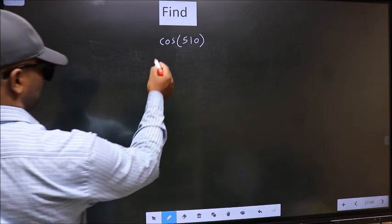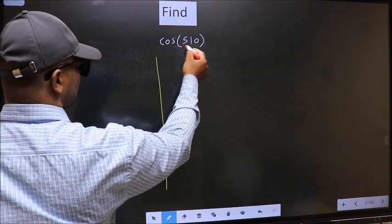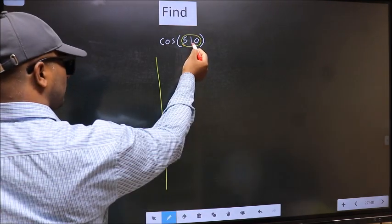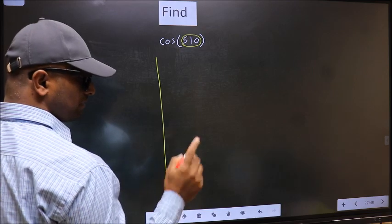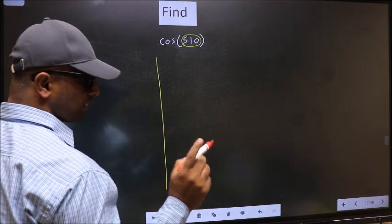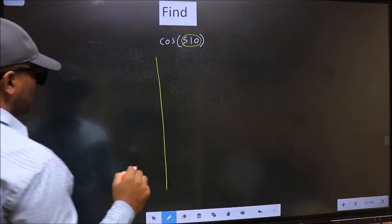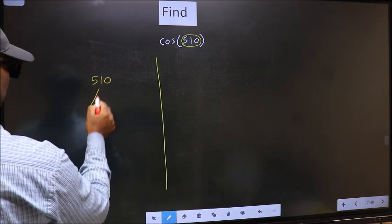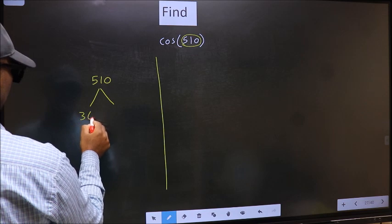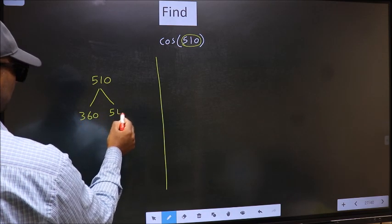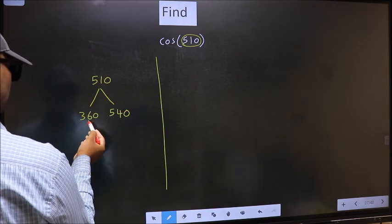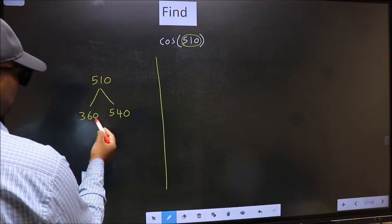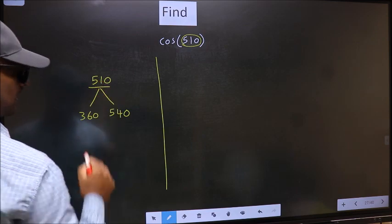See, here we have 510. Now you should check 510 lies between which two multiples of 180. What I mean is 510 lies between 360 and 540. This is 180 × 2. This is 180 × 3. Between these two numbers 510 lies.